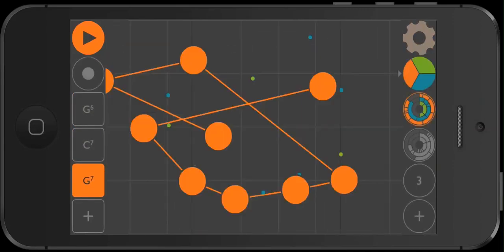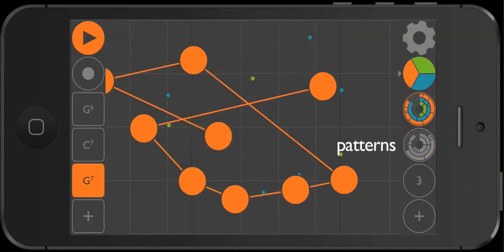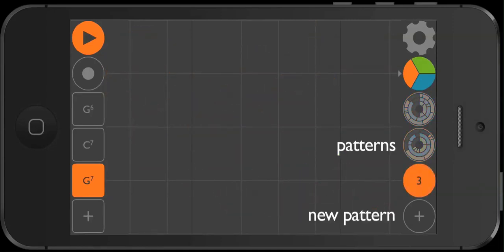On the right side of the screen you'll see three pattern buttons. Patterns are just collections of dots. To switch patterns, press one of these buttons. The plus button at the bottom creates a blank new pattern.